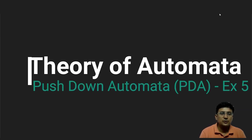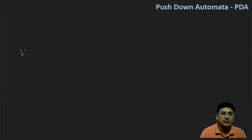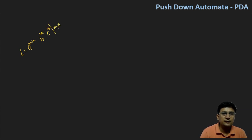Let's see some more examples on the pushdown automata. The language given to us is a raised to the power m plus n, b raised to the power m, and c raised to the power m, where the values of m and n are greater than or equal to 1.